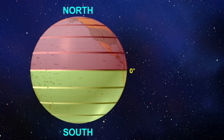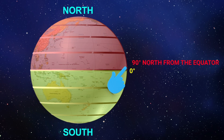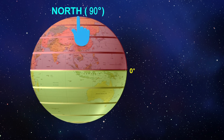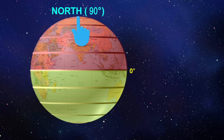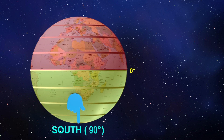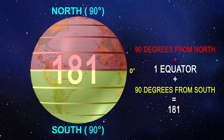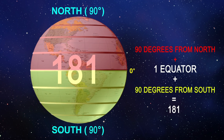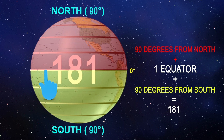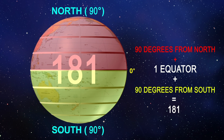Latitude can be defined maximum as 90 degrees north from the equator and 90 degrees south from the equator. The north pole has the latitude coordinate of 90 degrees north. The south pole has the latitude coordinate of 90 degrees south. There are 181 latitudes on the earth: 90 from north, 90 from south, and 1 equator, therefore total 181 latitudes.